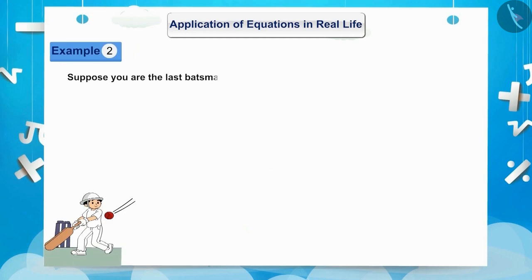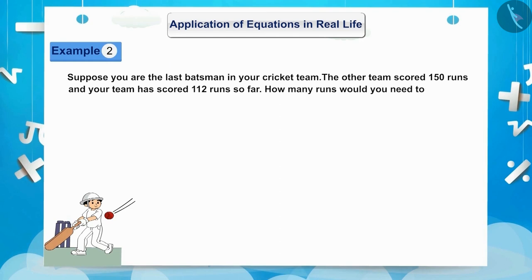Suppose, you are the last batsman in your cricket team. The other team scored 150 runs and your team has scored 112 runs so far. How many runs would you need to win?